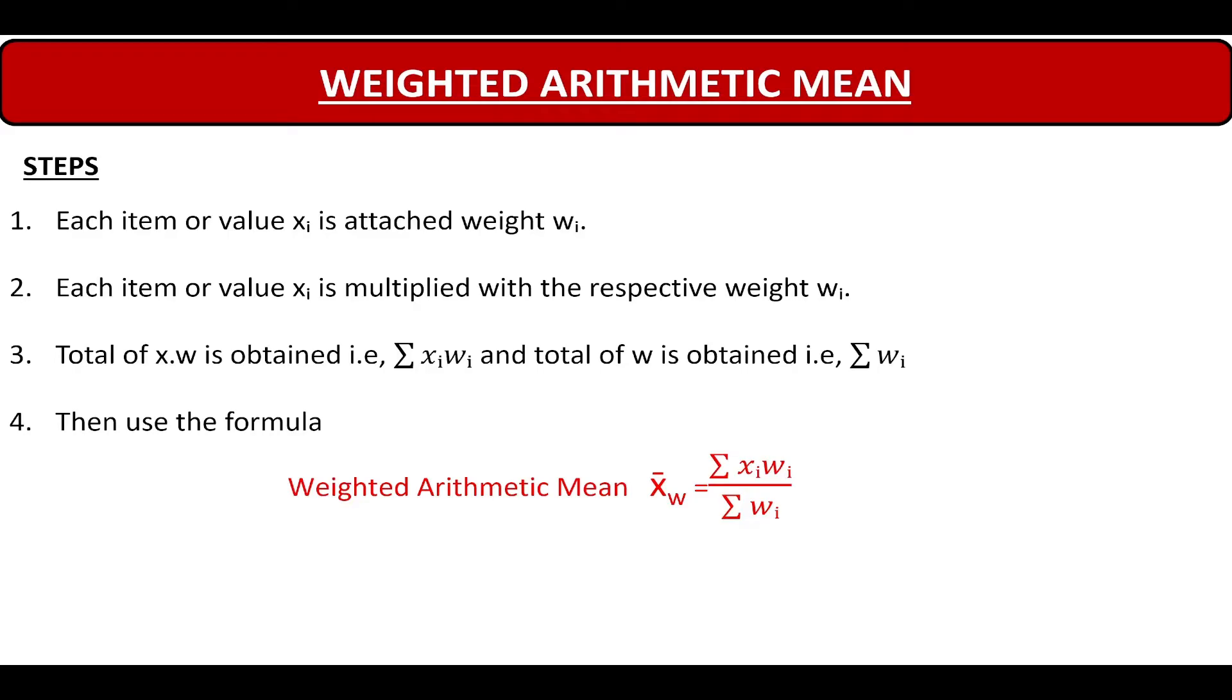Then by using the formula Weighted Arithmetic Mean X W bar is equal to summation of Xi Wi upon summation of Wi, we get the Weighted Arithmetic Mean. Remember this X bar with a subscript W indicates that it is a Weighted Arithmetic Mean.